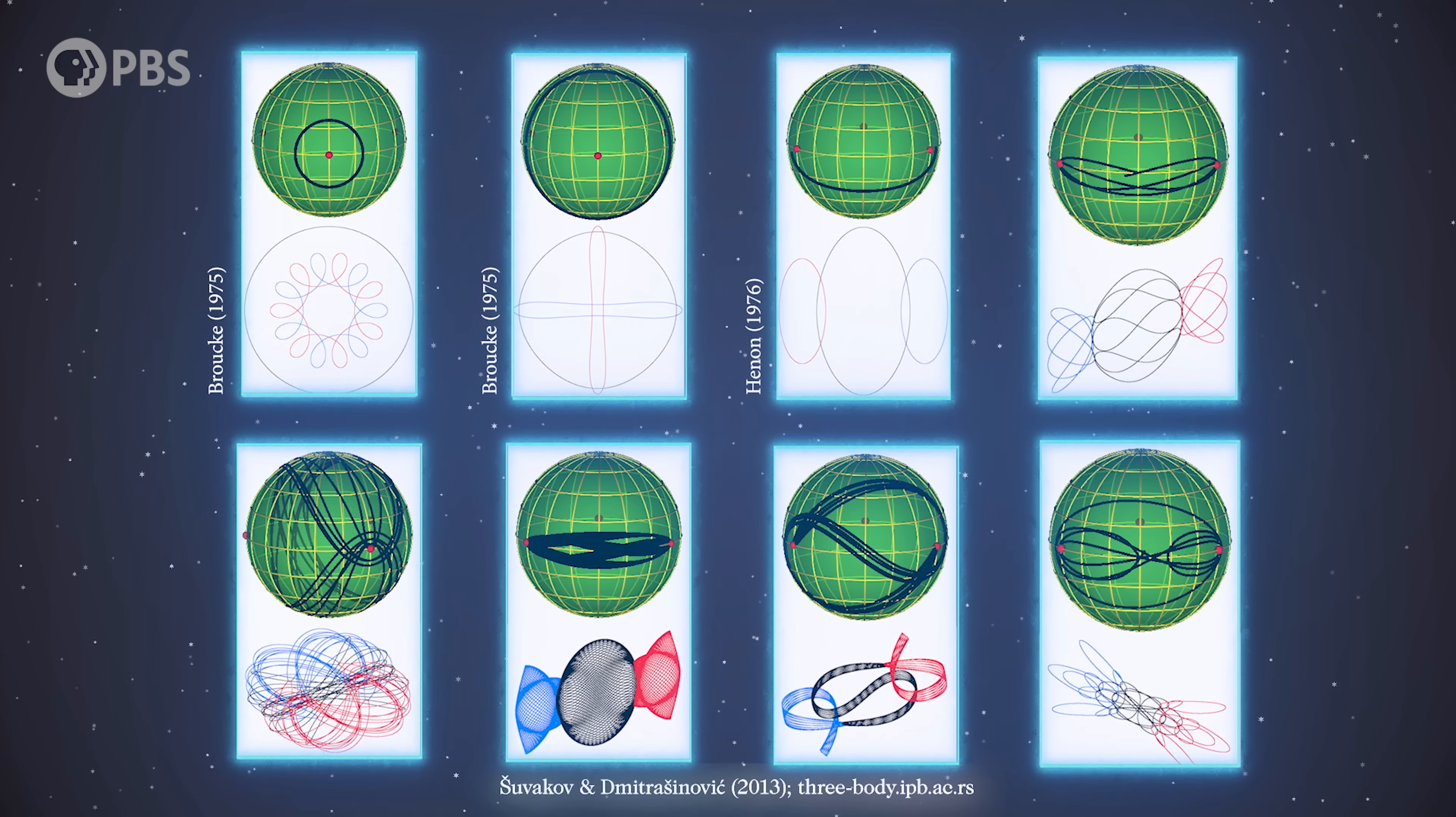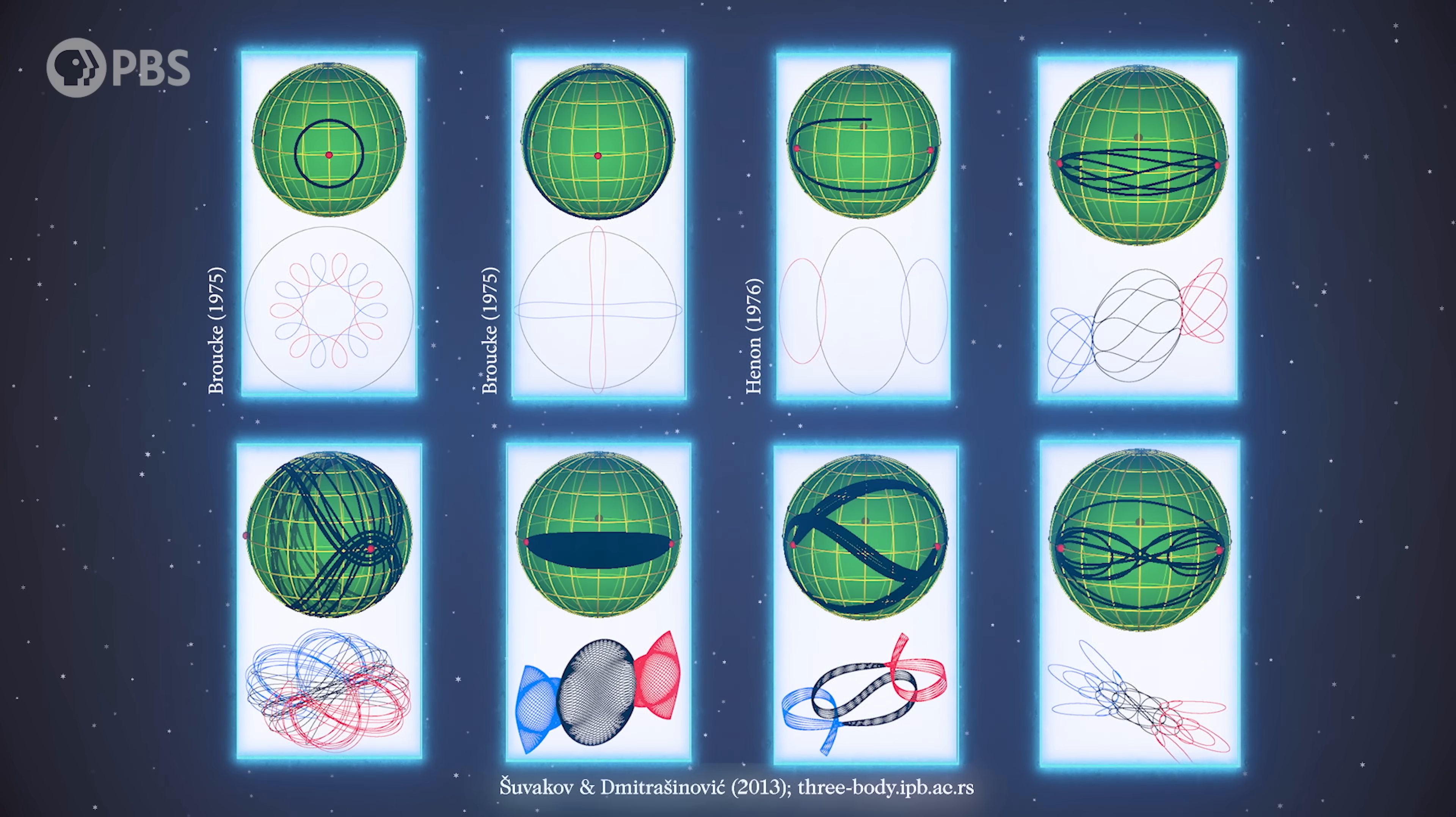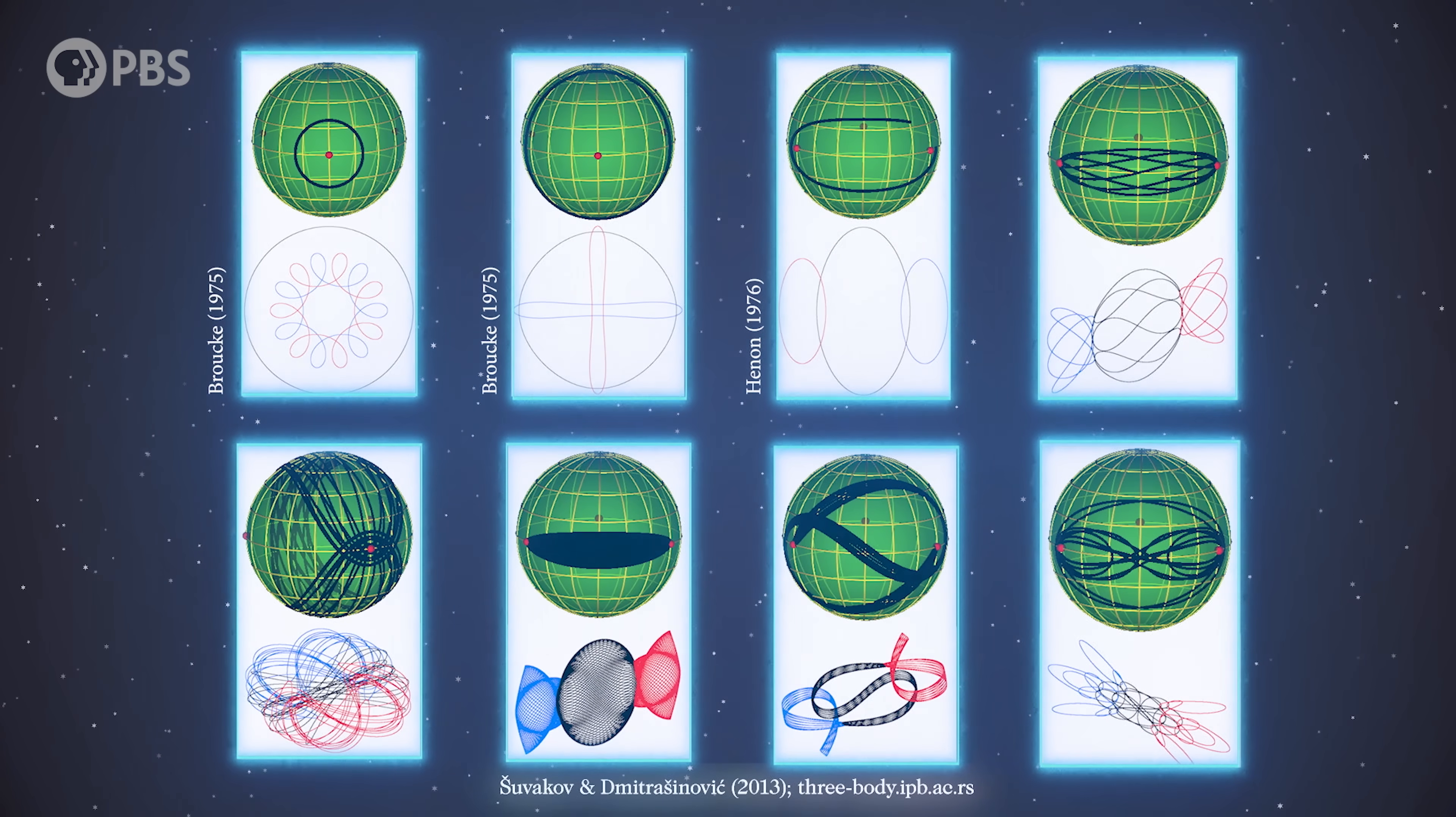It turns out that the periodic motion on the shape sphere appears much simpler and easier to analyze than the motion of the bodies themselves. Now hundreds of stable 3-body orbits are known, although it should be noted that besides the Euler and Lagrange solutions, none of these are likely to occur in nature, so their practical use may be limited.